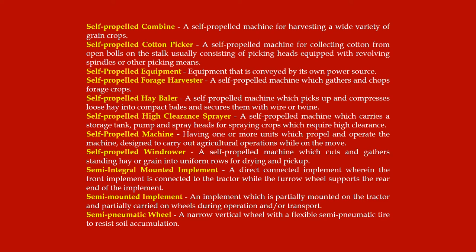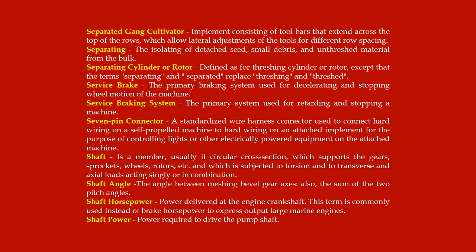Semi-pneumatic wheel: a narrow vertical wheel with a flexible semi-pneumatic tire to resist soil accumulation. Separated gang cultivator: an implement consisting of toolbars that extend across the top of the rows, which allow lateral adjustments of the tools for different row spacing.